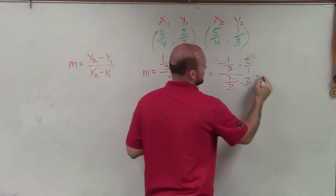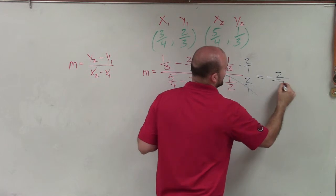That's going to multiply the 1, we multiply this across, and we get a final slope of a negative 2 thirds.